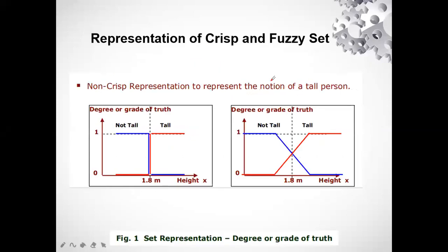When we represent the fuzzy set and the crisp set, what is the difference? Consider the example of height — whether a person is tall or not. In terms of the crisp set, it is defined that 1.8 meters is the height below which the person is not tall and above which the person is tall. So the crisp set has a specific, exact value — a straight line at 1.8.